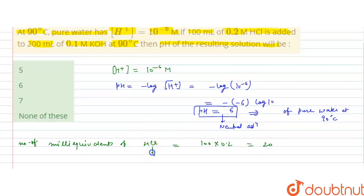HCl will give H positive and Cl minus ions, so number of milliequivalents of H plus will also be equal to 20 milliequivalents.